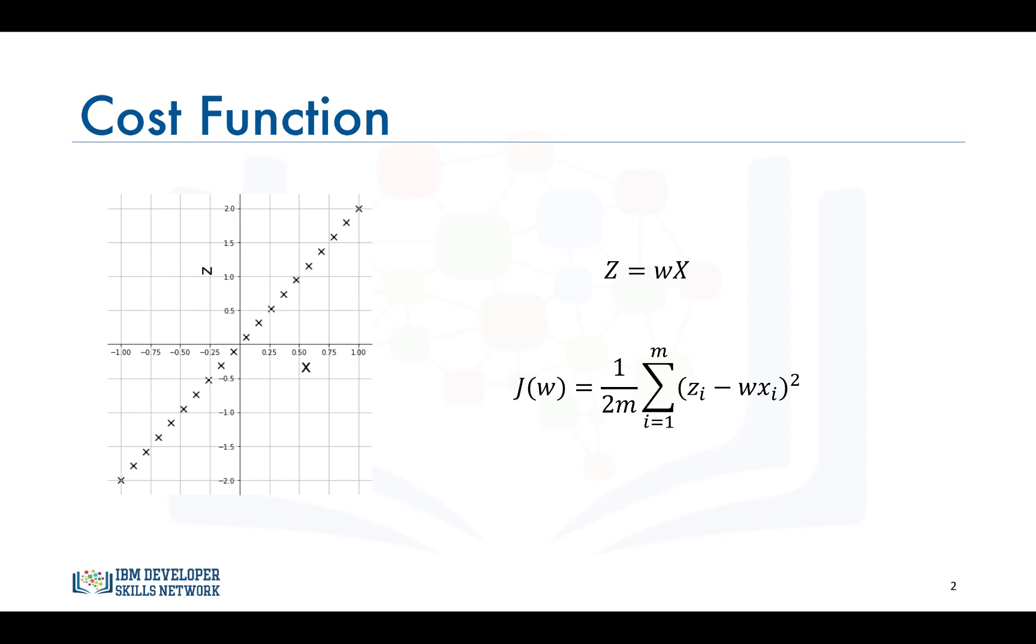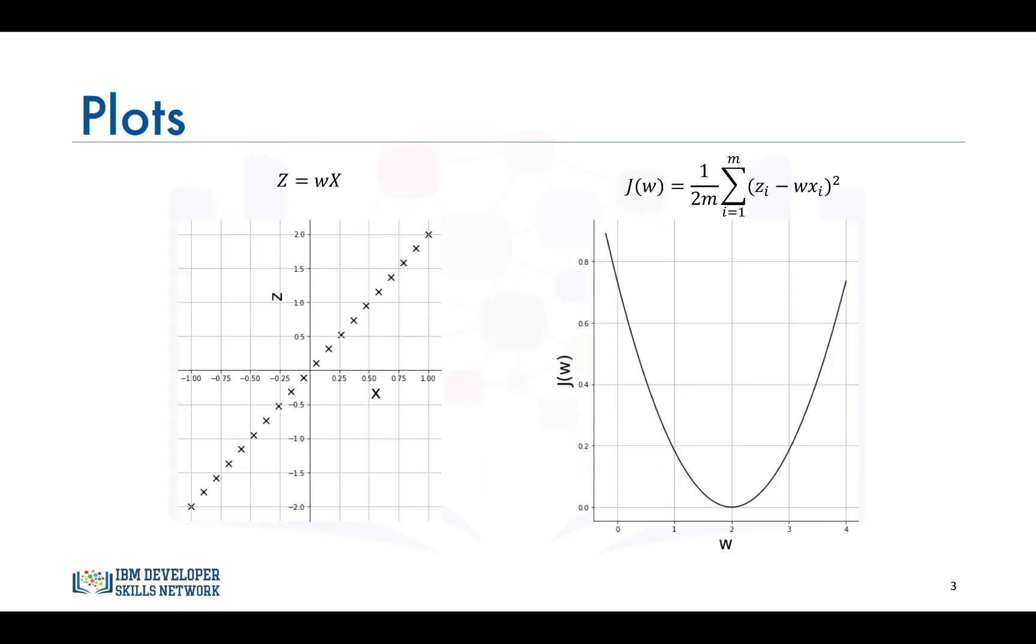Let's take a look at how this cost function looks like. What makes this loss or cost function attractive is that it's a parabola and has one global minimum or one unique solution. For the given data, the value of w that makes this cost function minimum is w equals 2, meaning z equals 2x, which would result in a line that fits the points perfectly.